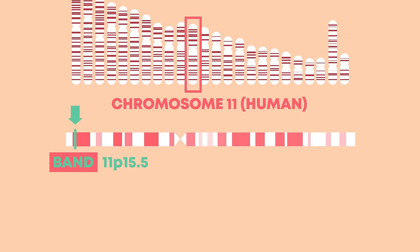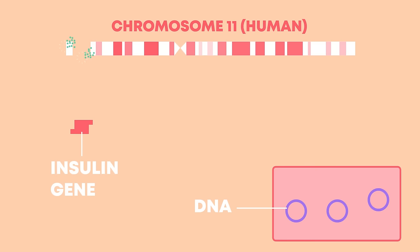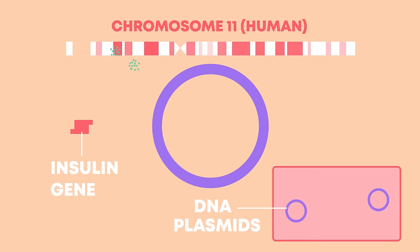The gene that codes for human insulin is found on chromosome 11 at position 15.5. The insulin gene is cut from chromosome 11 using special enzymes called restriction enzymes. Bacteria possess small circular strands of DNA floating in their cytoplasm called plasmids. A plasmid is extracted from the bacterium cell and cut open using the same restriction enzymes that were used to cut the insulin gene from the human chromosome. The restriction enzymes leave sticky ends where one of the two DNA strands is slightly longer than the other.